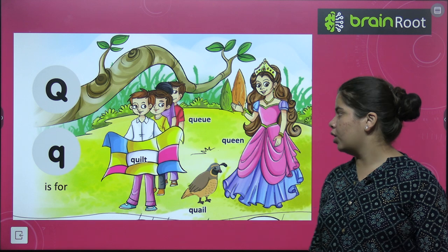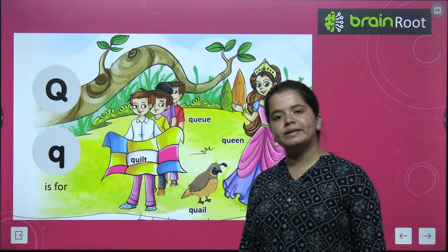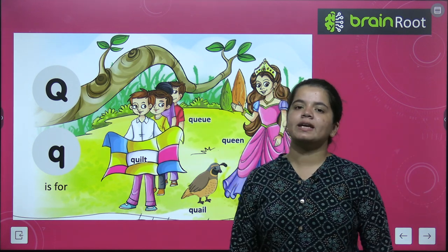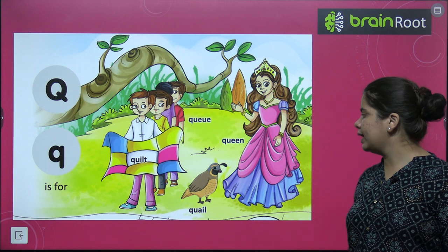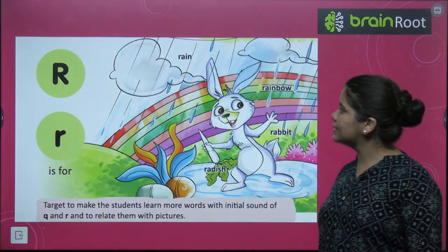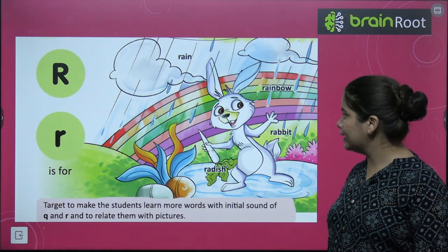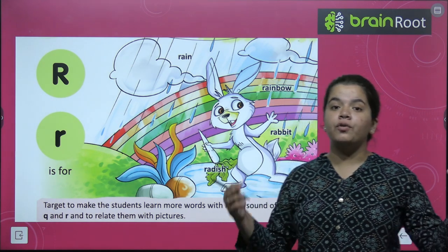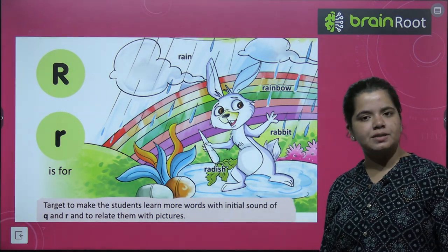Q for quilt, Q for queue — matlab jab aap school mein line bana ke khade hote ho na, use hum queue bolte hain. Q for queen, Q for quail. Next is R. R for rain, R for rainbow, R for radish, R for rabbit.